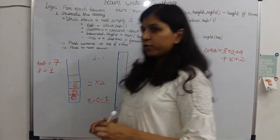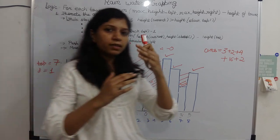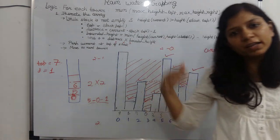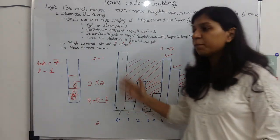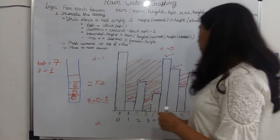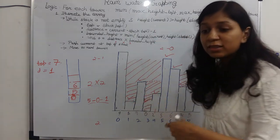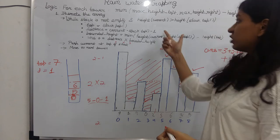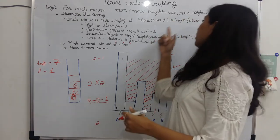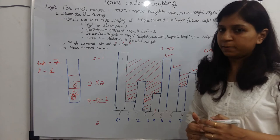So in this approach, if we are going to the smaller side, we keep pushing to the stack. If we encounter a larger element, we pop from the stack. The height of the current will be compared with the height of the stack top.